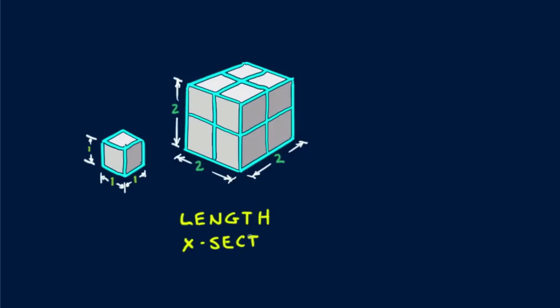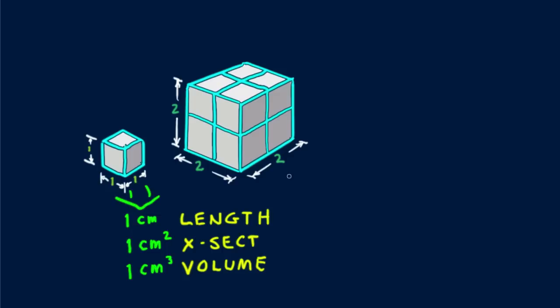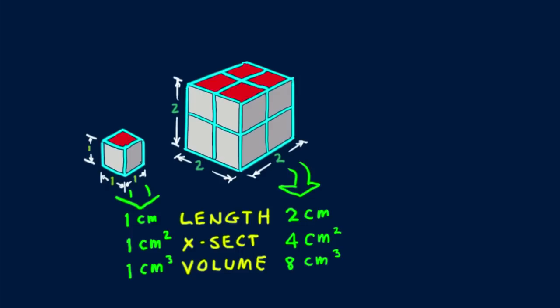Let's look at the length, the cross-sectional area, and volume for these two cubes. The small cube has a length of one centimeter, a cross-sectional area of one square centimeter, and a volume of one cubic centimeter. For the two-centimeter cube, the cross-section is two by two, or four square centimeters, and its volume is eight cubic centimeters. The cross-sectional areas are the same as the areas of the top surfaces, colored red.